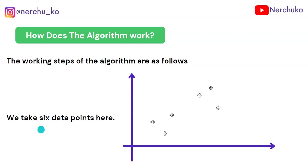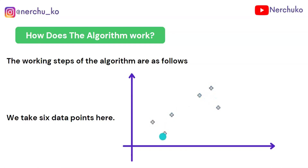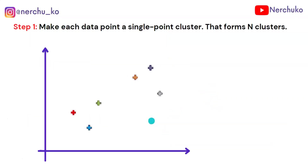Initially we have 6 data points, so 6 observations. The agglomerative bottom-up approach works as follows. Step 1: make each data point a single-point cluster. That forms n clusters — so with 6 observations, we have 6 individual clusters to start.